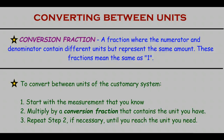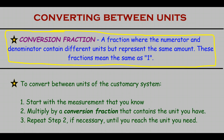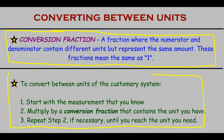Go ahead and pause the video, and write down two things. First, write down the definition of a conversion fraction: a fraction where the numerator and denominator contain different units but represent the same amount — in a way, these fractions equal 1 when we're converting. And to convert between units of the customary system, we use this process: start with the measurement we know, multiply by a conversion fraction that has that unit, and then repeat step two if necessary until we reach the unit we need. You don't have to understand exactly what the conversion idea means right now — we'll go through an example in just a second.